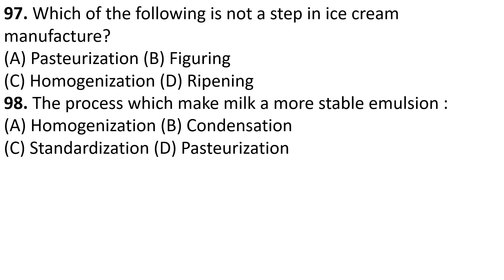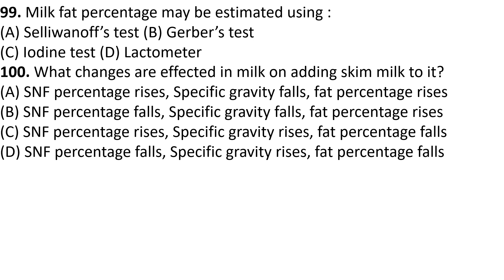Which of the following is not a step in ice cream manufacture? The answer is homogenization — it is the most stable step. Milk fat percentage may be estimated using Option B.